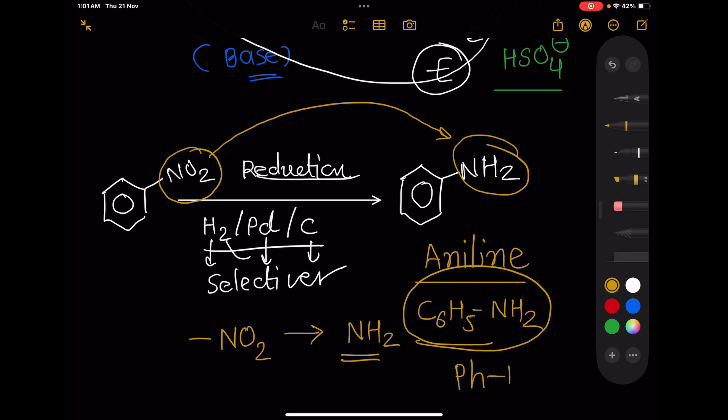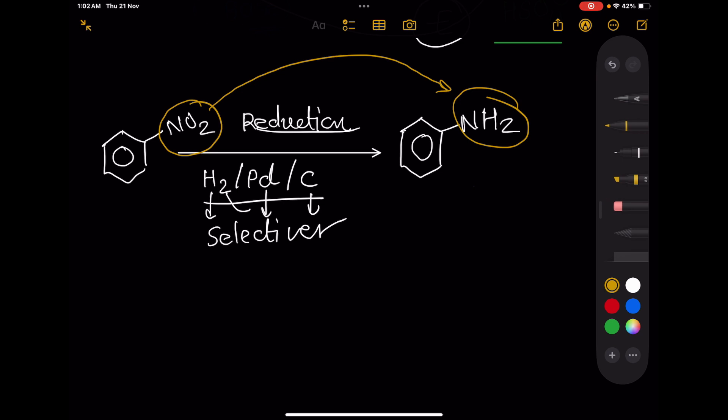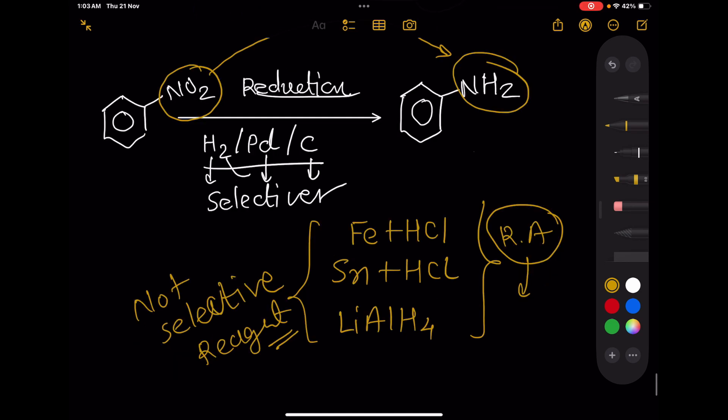There are many reducing agents present like Fe plus HCl, Sn plus HCl, lithium aluminum hydride. These reagents are not selective. If any other group is present in solution, they will also reduce them.